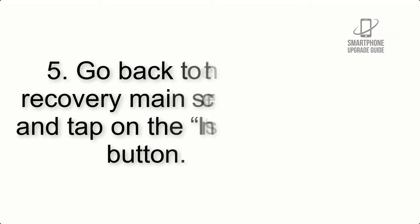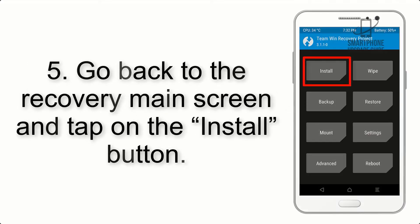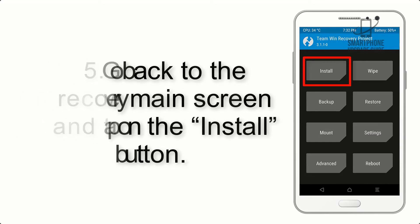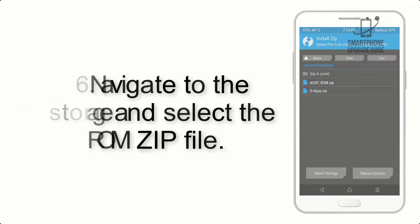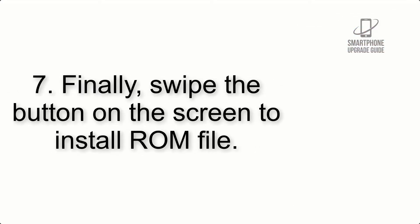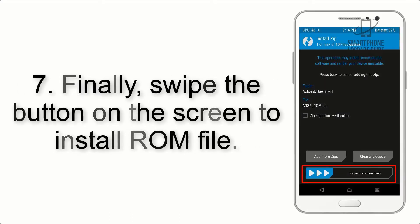Step 4: Swipe the button to wipe the device. Step 5: Go back to the recovery main screen and tap on the Install button. Step 6: Navigate to the storage and select the ROM zip file.